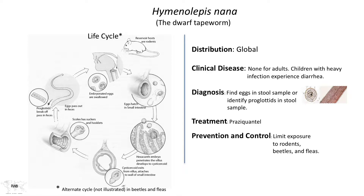The diagnosis is very straightforward — just find the eggs in the stool. They are very characteristic, with hooklets and a larval stage inside that is easily identified. Or if segments are brought in, they are characteristic for Hymenolepis nana and can be distinguished from other tapeworms based on morphology. Treatment is straightforward: praziquantel is the drug of choice.